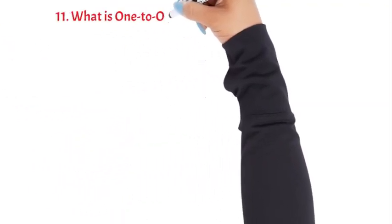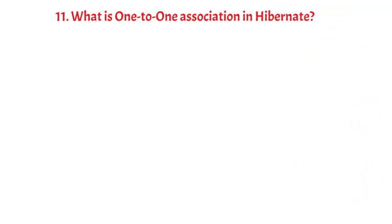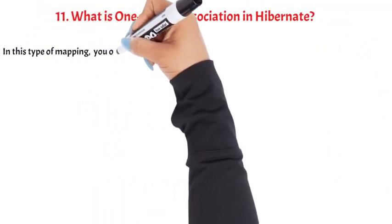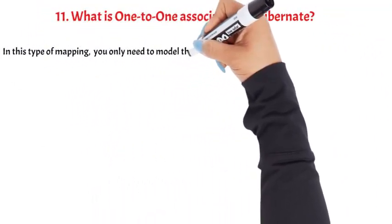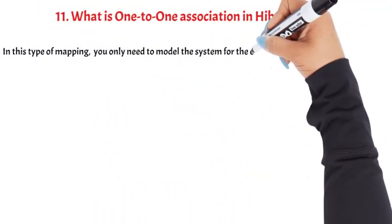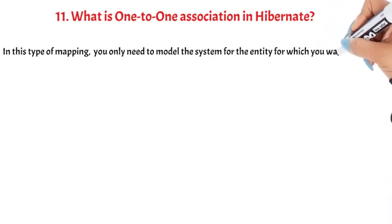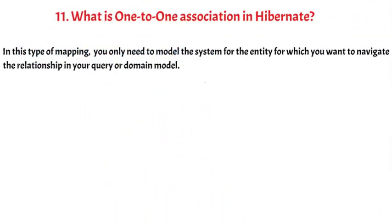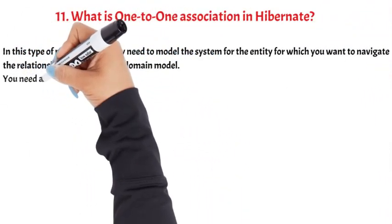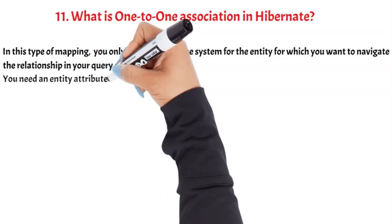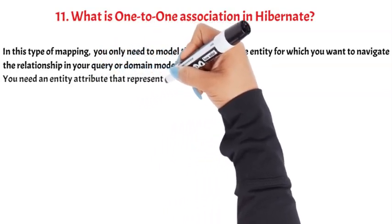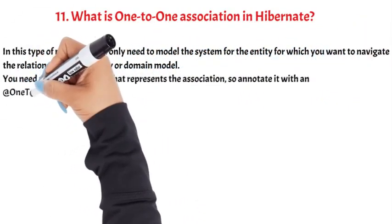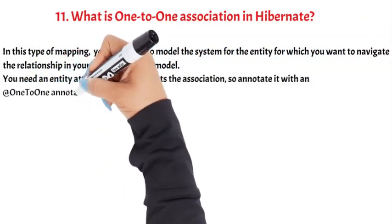Question 11: What is 1-to-1 association in Hibernate? In this type of mapping, you only need to model the system for the entity for which you want to navigate the relationship in your query or domain model. You need an entity attribute that represents the association, so annotate it with a @OneToOne annotation.